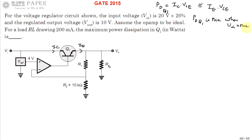If you apply maximum input voltage, you get maximum power dissipation across the transistor; less voltage gives less dissipation. The input is given as 20 volts ±20%. 20% of 20 volts is 4 volts, so the input can decrease or increase by 4 volts. Therefore the input voltage range is from 16 to 24 volts.